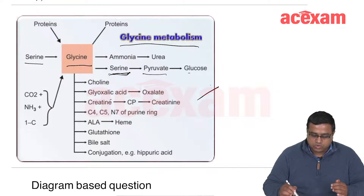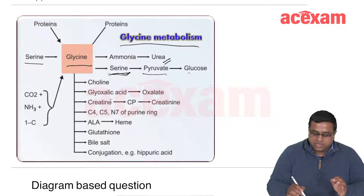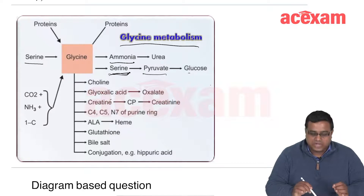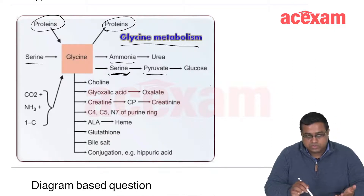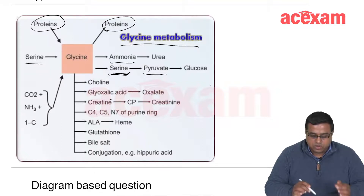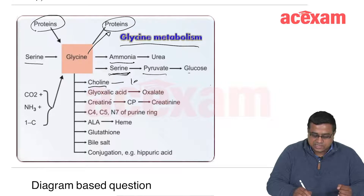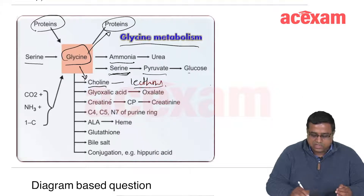Urea is the ultimate excretory product of all amino acids, including glycine. Glycine will produce urea via ammonia. Glycine is also a component of proteins. From glycine you also get choline, which is a component of lecithin. Lecithin forms surfactant — necessary for proper lung function. Lack of lecithin in premature newborns causes respiratory distress syndrome.